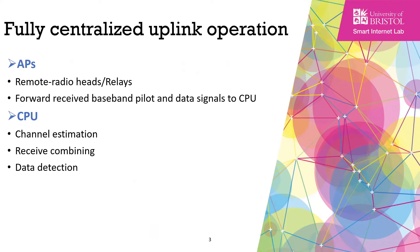In a fully centralized uplink operation, the APs will only act as the remote radio heads, or we can call them relays. So APs will only forward the received baseband pilot and data signals to the CPU without performing signal processing. Instead, the CPU will do the channel estimation, the receive combining, and the data detection.